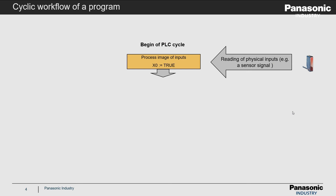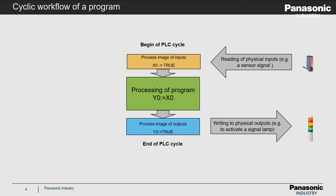First, this high signal of the sensor is read and is stored in the process image of inputs for one PLC cycle. One simple line of code is used in the PLC program to assign the value of input X0 to output Y0. The value of output Y0 is then saved in the process image of outputs.